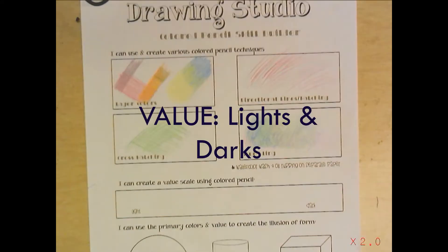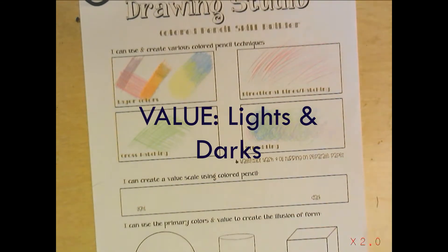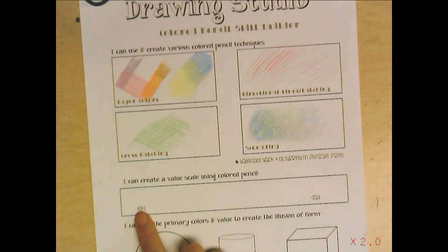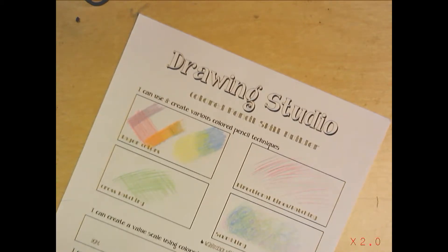This part is very important - I can create value using pencil. Value means lights and darks. On this side you want to do light, this side you want to do dark, and then all here in the middle is your medium values. Pick your color. I always like to start dark, so you want to press hard when you are coloring to make things dark.